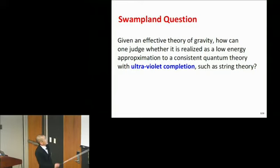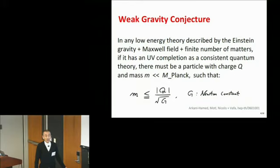I've been interested in this swampland question for many years. If somebody gives you an effective theory of gravity, how can I judge whether it is realized as a low-energy approximation to a consistent quantum theory with ultraviolet completion, such as string theory? And weak gravity conjecture is an example of this swampland criterion.